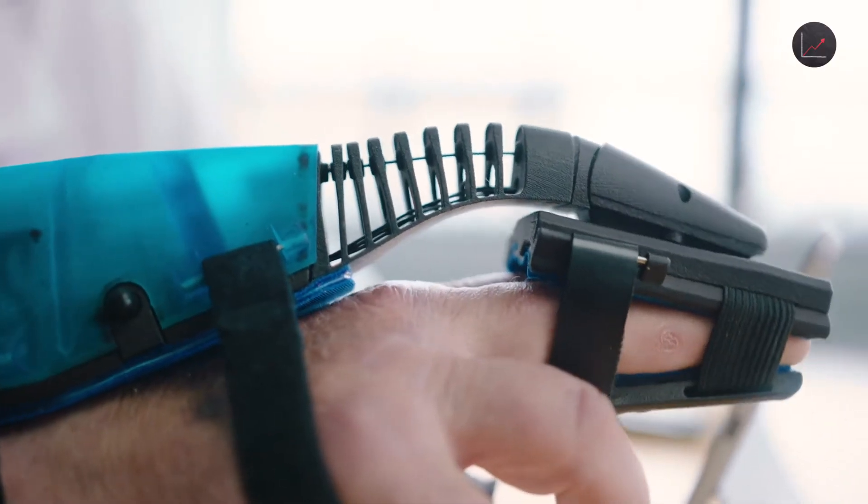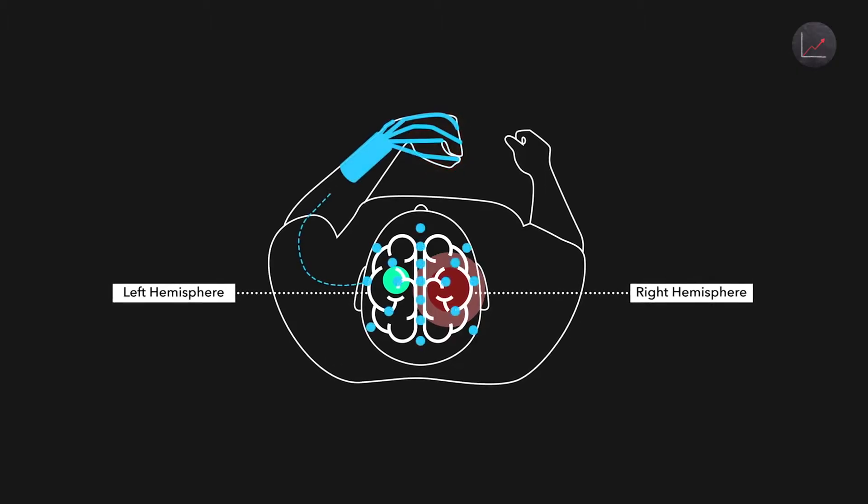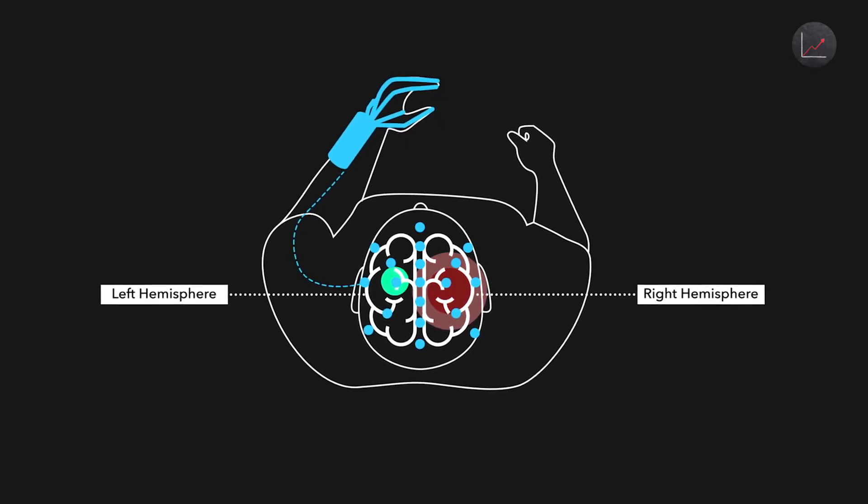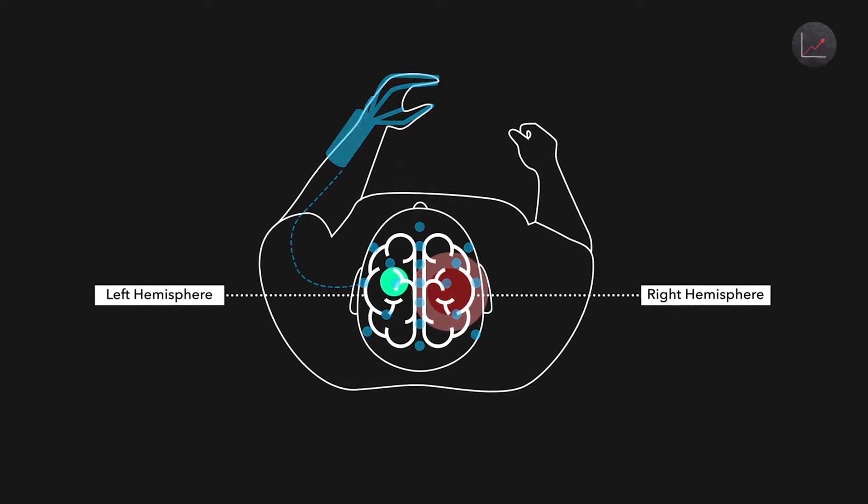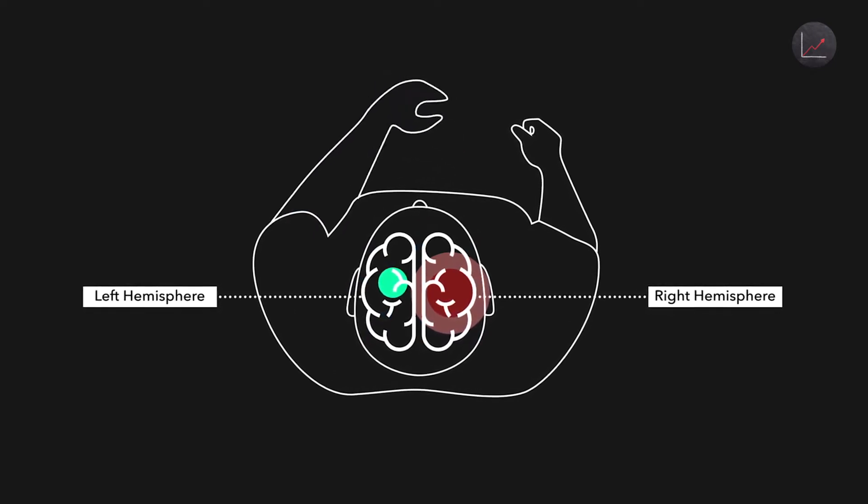As the person continues to use it over time, it's essentially leading to a rewiring of the brain. There's this kind of neuroscience notion of what fires together, wires together. So when they're generating those brain signals to move and they're getting that feedback from that wearable that's leading to new connections forming in the brain that allows eventually that uninjured side of the brain to take over control of the paralyzed limb.